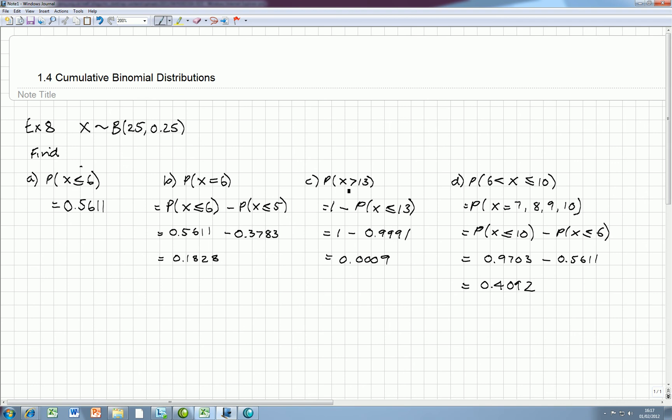For greater than problems, you can do 1 minus, because you know that all the probabilities are going to add up to 1 in total. And for more difficult questions, it helps to actually write down the values of x that you're trying to solve the problem for, and then hopefully you can rephrase that in terms of less than or equal to questions. Thank you.